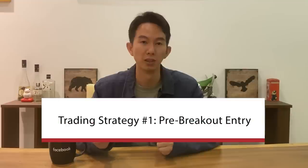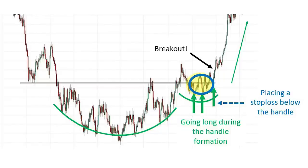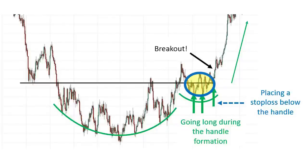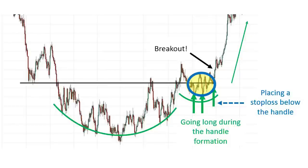The first trading strategy is the pre-breakout entry. The strategy is to enter just before the completion of the pattern during the handle formation. During the cup formation, buyers accumulate long positions and build bullish pressure with occasional tests of the resistance level. As the handle forms, it is very close to the breakout, providing a good low-risk opportunity to enter just before the action begins. Once the breakout happens, price and volume are expected to surge, making it more challenging to enter. For trading, we look to enter during the handle formation close to the resistance level, and place a stop loss below the handle. Since the handle is usually small relative to the pattern, the risk will not be very high.